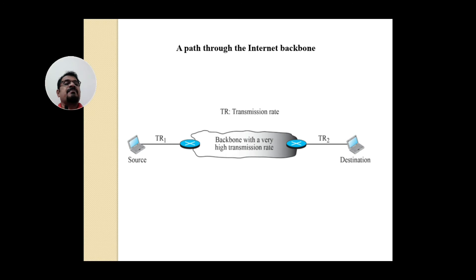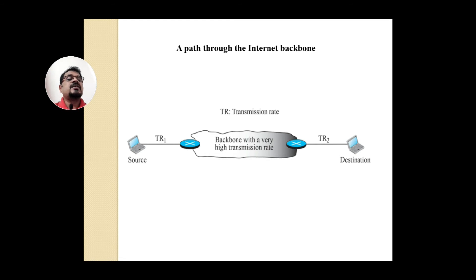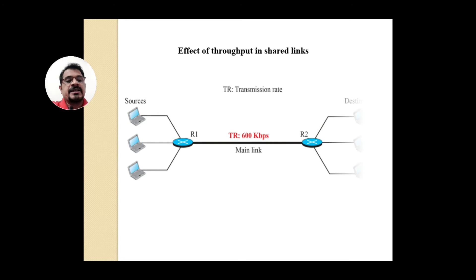When considering a path through the internet backbone, the backbone at the back end must have a higher capacity to handle a huge amount of traffic. From the source to the first router there is one transmission rate (TR1), and from the last router to the destination there is another. But in between, the backbone from one router to another must have a high transmission rate so the routers can handle large volumes of traffic.